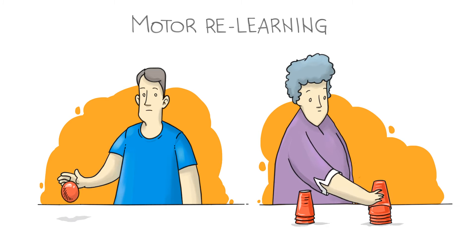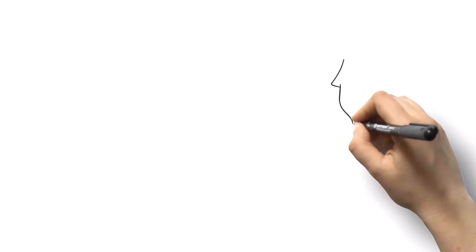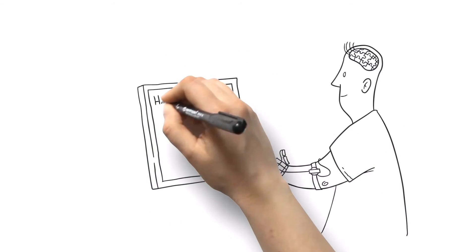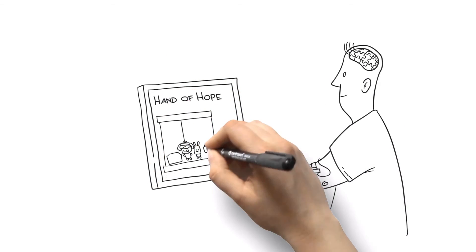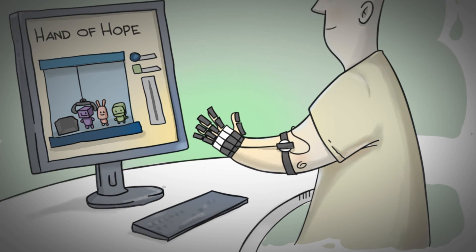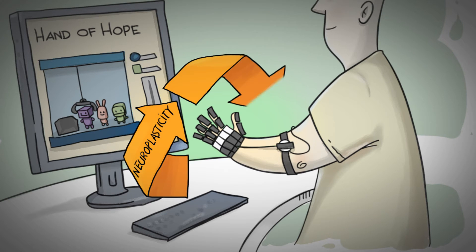So four months ago, Sam started using Hand of Hope, our innovative technology that helps stroke survivors regain hand function through active rehabilitation training built upon the principles of neuroplasticity, motor relearning, and neuro rehabilitation.